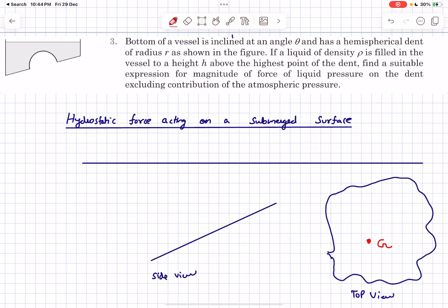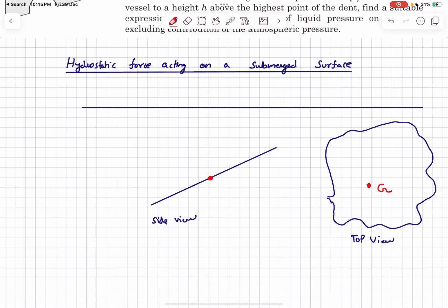Let's mark the centroid of this planar surface as G. In our side view, the centroid is over here and its height from the free surface is hc. Now, the result is that if I want to write the net force acting on this surface, its magnitude is simply the pressure at the centroid multiplied by the area of the surface.